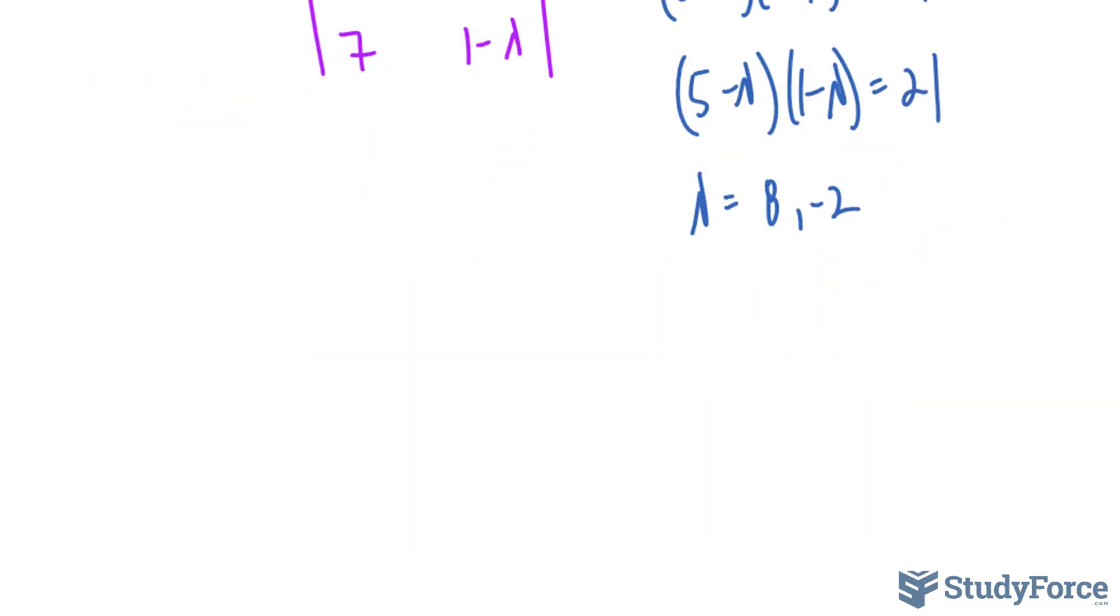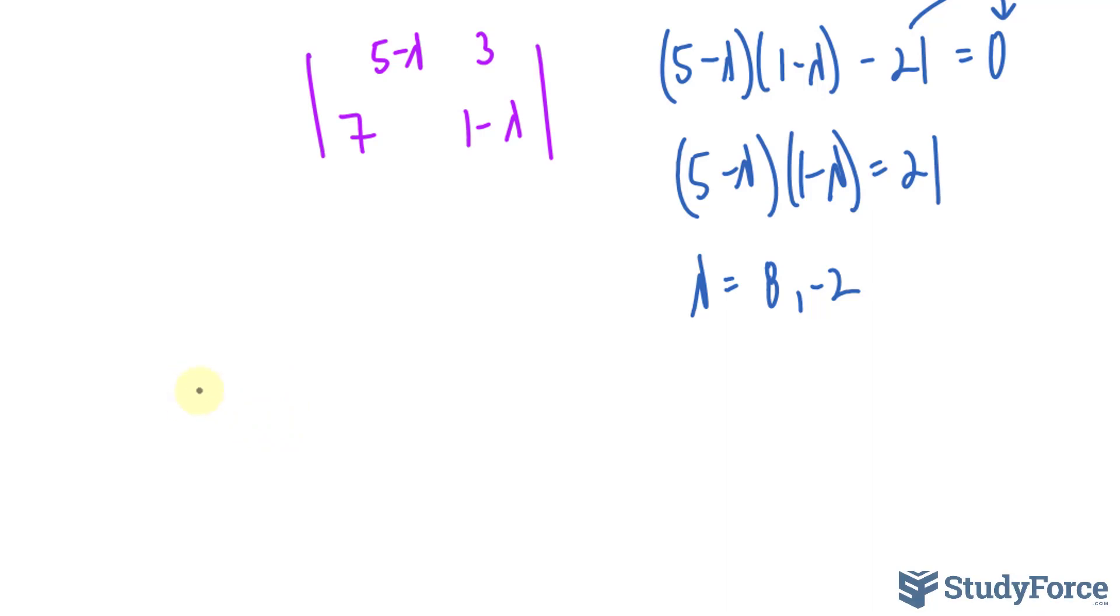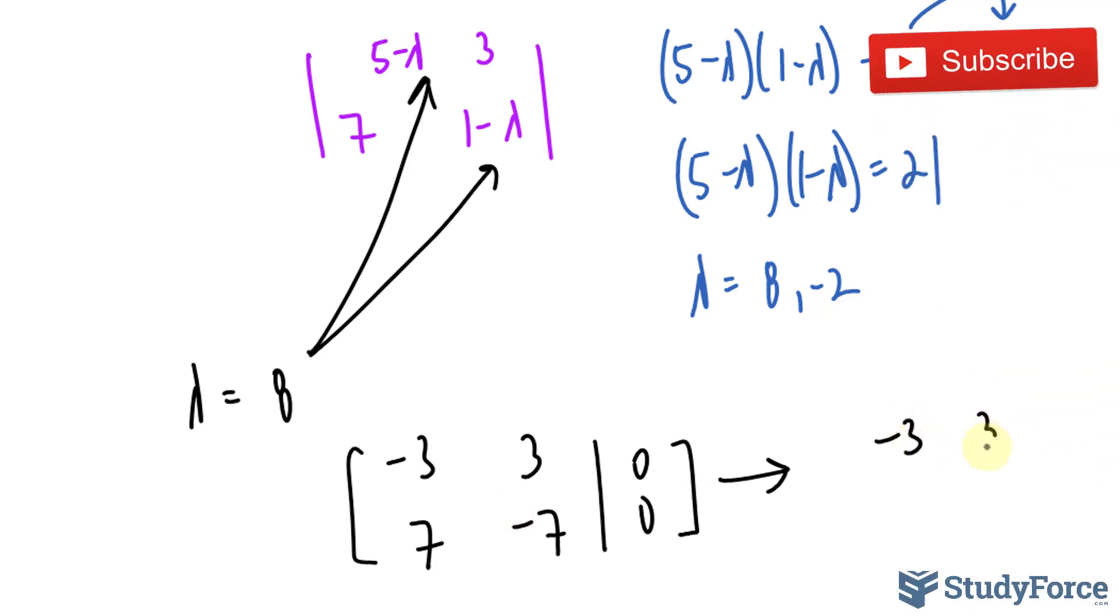I will borrow what I learned from up here. And I'll start with the eigenvalue of 8. And using this matrix, I'll substitute 8 where I see the lambda. 5 minus 8 is negative 3, 3, 7, and negative 7. I will row reduce this matrix, where it ends up becoming negative 3, 3, and 0, 0, 0, 0.